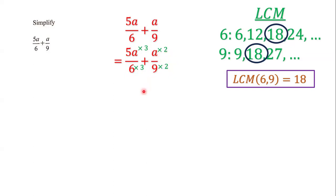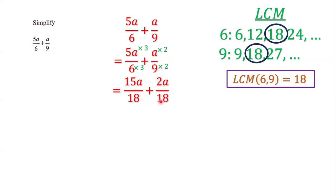6 times 3 gives us 18, and 9 times 2 gives us 18. 5a times 3 gives us 15a, and a times 2 gives us 2a. Now we have two fractions where both denominators are the same, so we can add them.